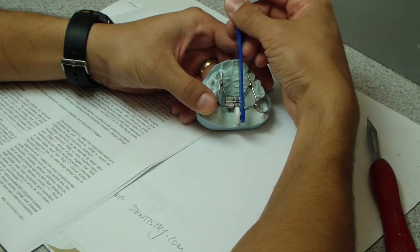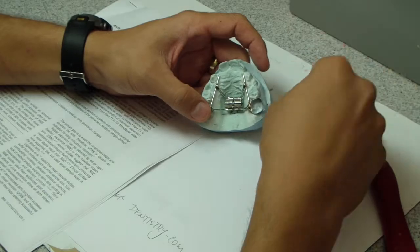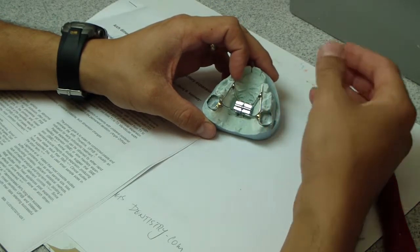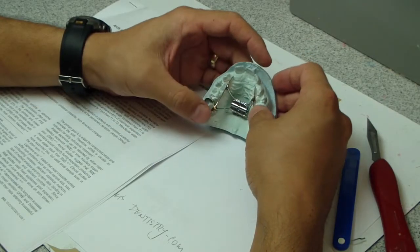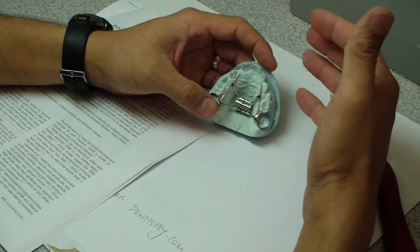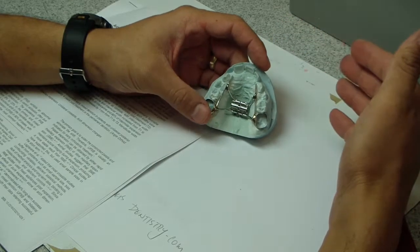So each turn is 0.25 millimeters. So we're going to lute this down with some sort of glass ionomer cement and then we'll send the patient home. Now we can either do rapid palatal expansion or we can do slow palatal expansion.